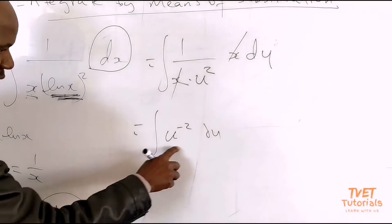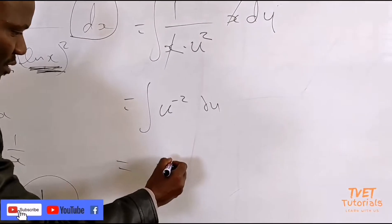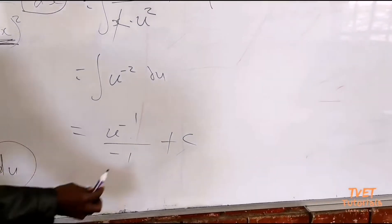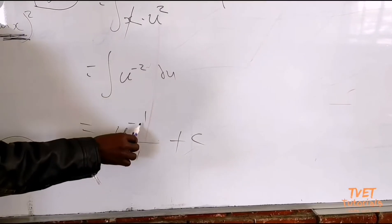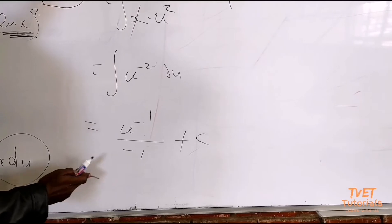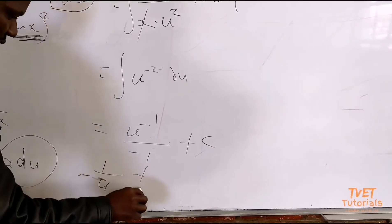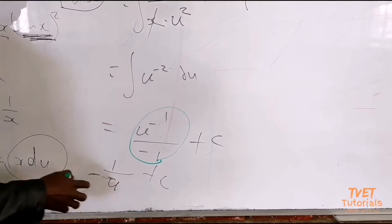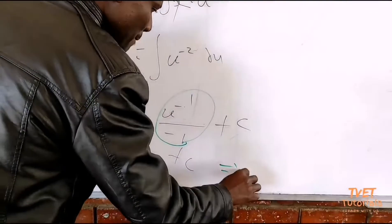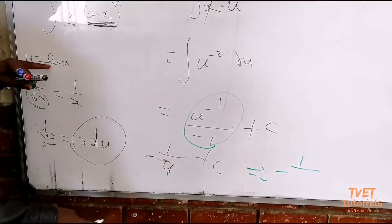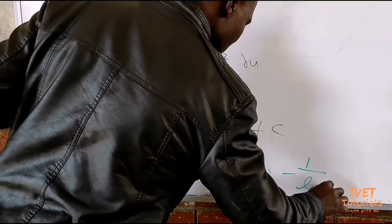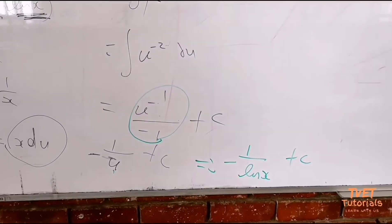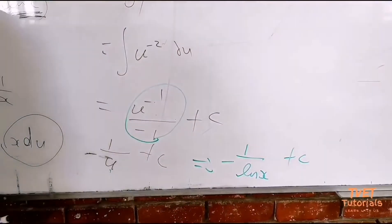Now you integrate the expression given entirely in terms of u. It's going to be u to the power of negative 1, giving negative 1 over negative 1 plus c. After integrating, always add c. Negative 1 divided by negative 1 gives negative negative 1 over u plus c, which simplifies to negative 1 over u. Therefore, the answer is negative 1 over ln x plus c. That is the integral by means of substitution.